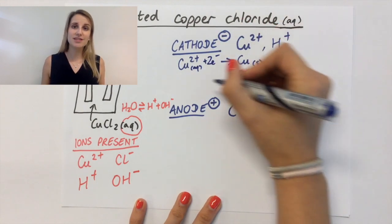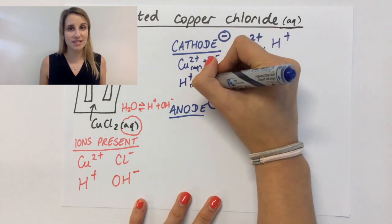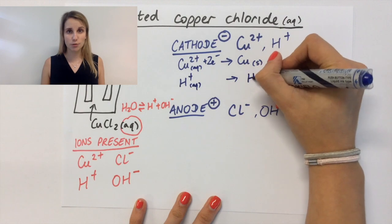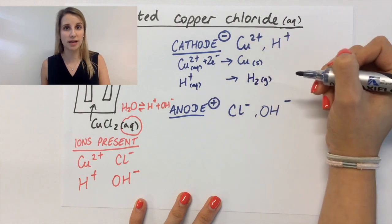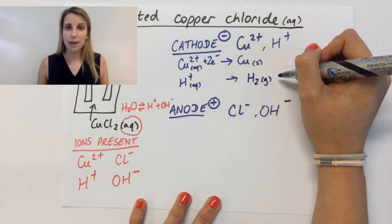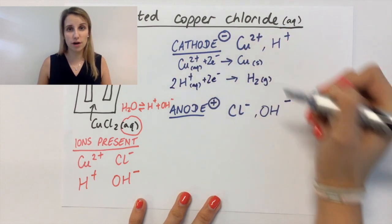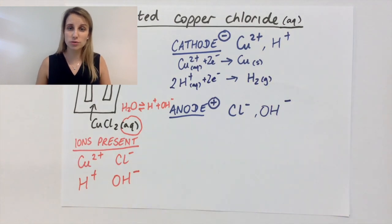The other option is if the H+ gets reduced, then what it becomes is hydrogen gas, which exists as a diatomic gas. So you need to write that as H2. To balance this out, I need to balance the hydrogens first by adding the big two in front, and then two electrons also to the left hand side to show that H+ becoming reduced.